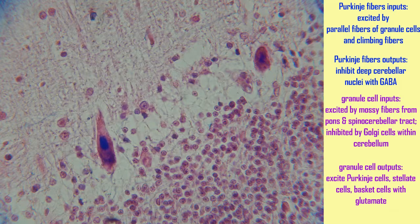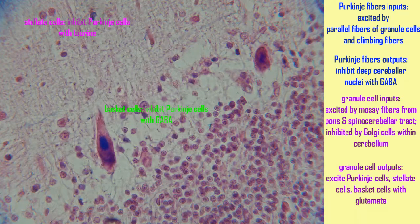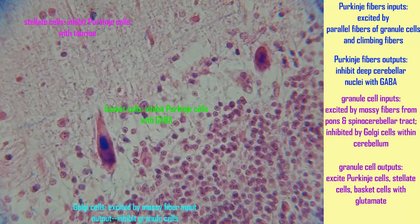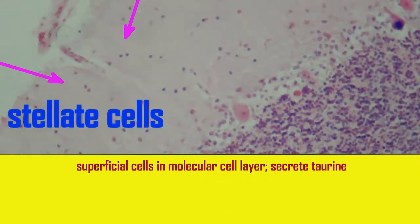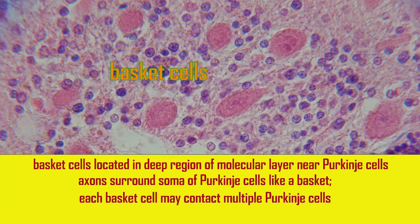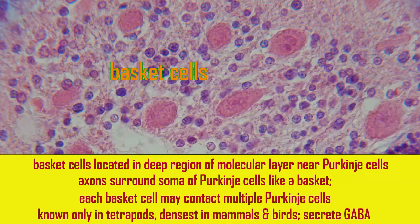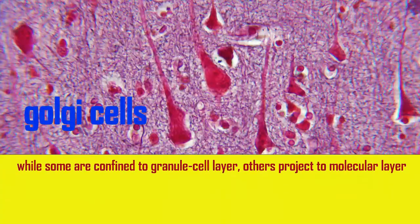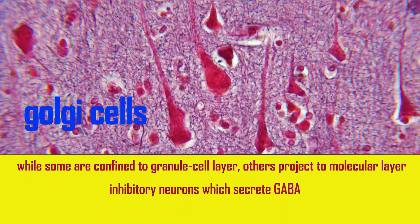The other neurons in the cerebellum — the basket cells, the stellate cells, and the Golgi cells — also receive inputs and send out outputs. And so there is a great deal of interaction between the neurons of the cerebellum.